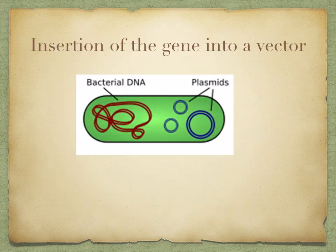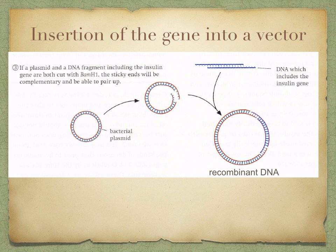Bacteria contain a piece of circular DNA separate from the cell DNA, called a plasmid. Plasmids almost always contain genes for antibiotic resistance, and it's at one of these antibiotic-resistant genes that restriction endonucleases are used to break the plasmid loop. If you cut the plasmid using the same restriction enzymes used to cut your DNA fragment, both their sticky ends will be complementary. When you mix your DNA fragment with the opened-up plasmid, your DNA fragment may become incorporated into that plasmid, joined together by the enzyme ligase.